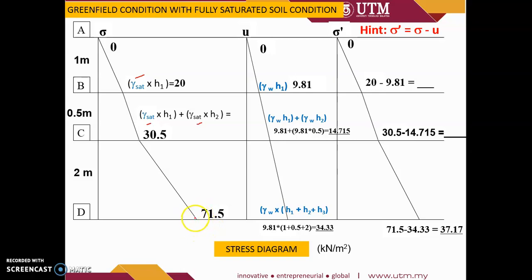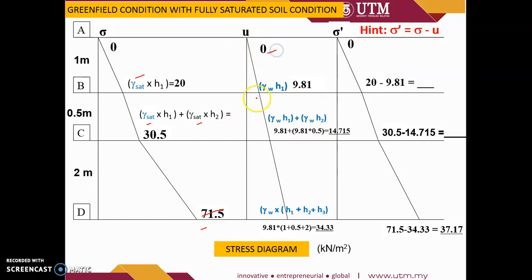Similarly you have to calculate for D: gamma saturated × H1 plus gamma saturated × H2 plus gamma saturated × H3. Since the groundwater table is at the surface, we calculate pore water pressure for each layer. At the phreatic surface, pore pressure equals zero. At B, pore pressure equals gamma water × H1, giving 9.81, and similarly for layers 2 and 3.